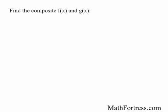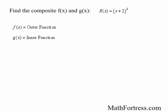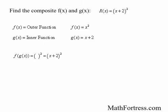Find the composite f of x and g of x of the following functions. Say we have r of x equals the quantity x plus 2 squared. Our f of x is going to be the outer function and our g of x is going to be the inner function. In this case, the outer function is x squared and the inner function is the quantity x plus 2. As a way to check your answer, let's calculate the composition of f and g of x. So the composition tells us to evaluate f of x using g of x, and it turns out that the composition of f and g of x is the quantity x plus 2 squared.